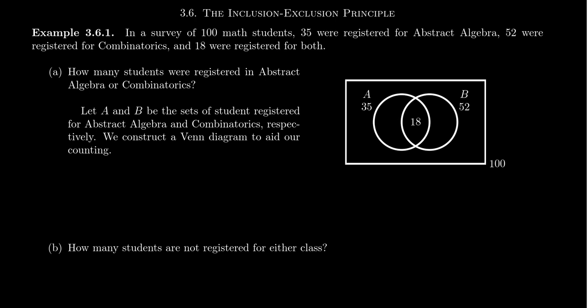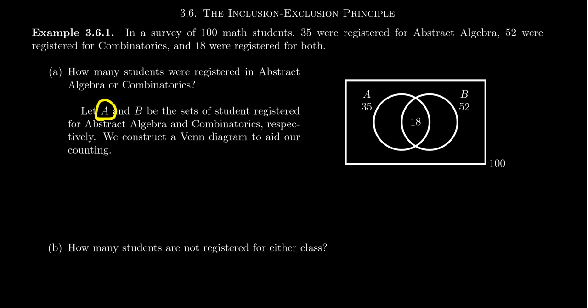The problem we have in front of us right now is we want to answer the question: how many students were registered in abstract algebra or in combinatorics? Notice this information about 18 would be how many students are registered in both of the classes. Let's let set A be the set of students who are registered for abstract algebra, and we're going to let set B be the set of students who are registered for combinatorics. So we have our two sets, A and B.